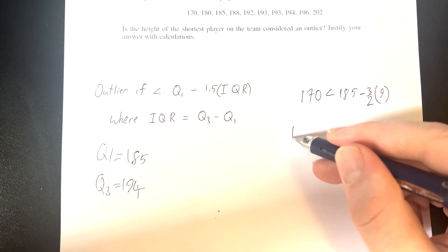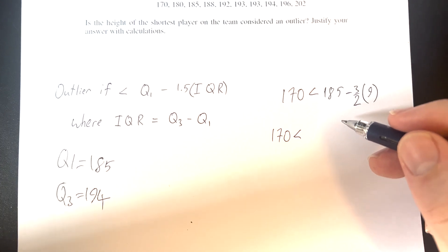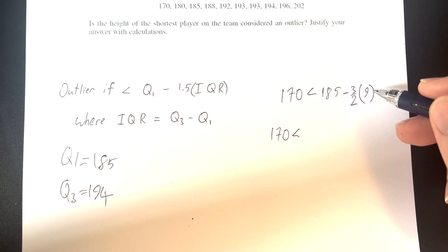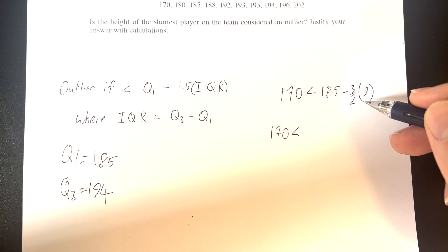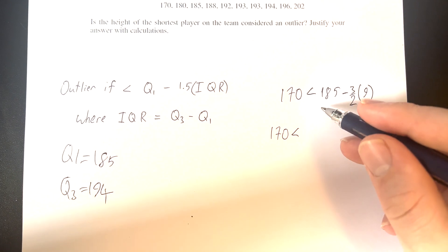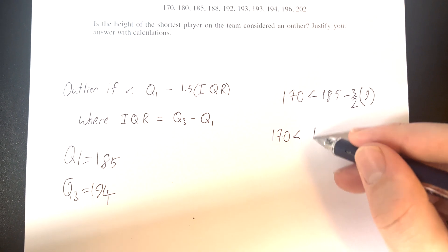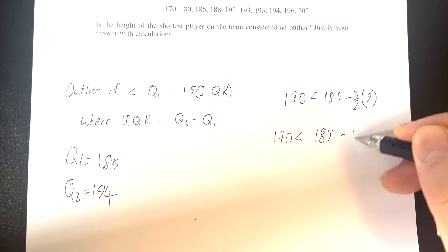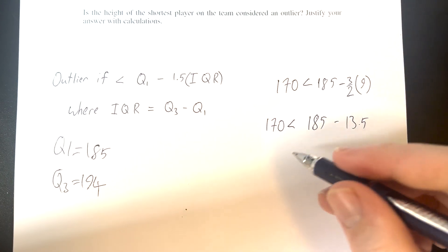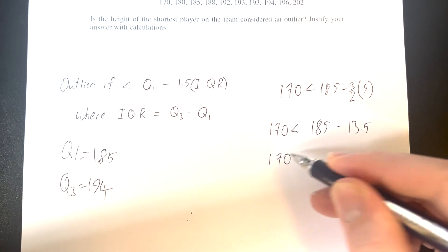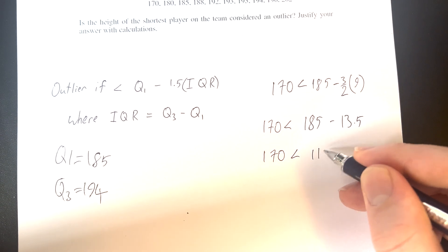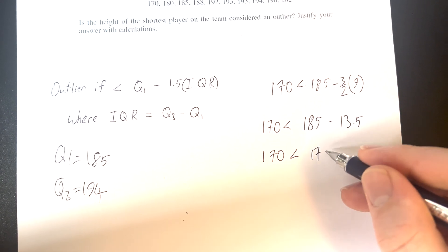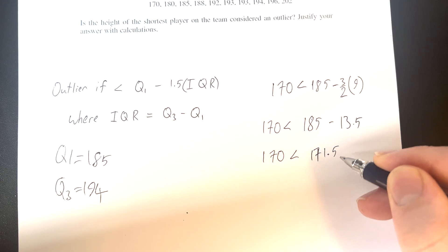Now we have 170 less than 185 minus 3 times 9, which is 27, over 2, which would be 13.5. So 185 minus 13.5 equals 171.5.